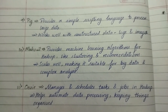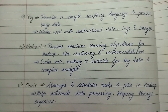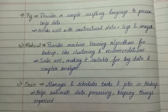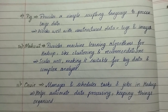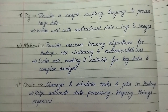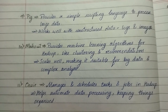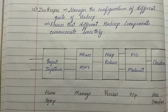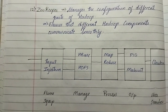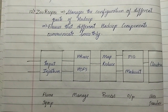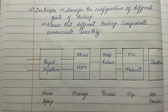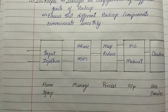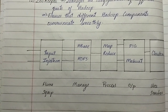Eleventh is Oozie. It manages and schedules tasks and jobs in Hadoop and helps automate data processing, keeping things organized. Twelfth is ZooKeeper. It manages the configuration of different parts of Hadoop and ensures that different Hadoop components communicate smoothly.